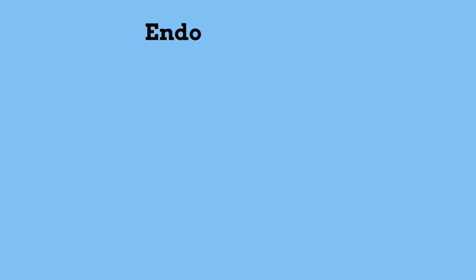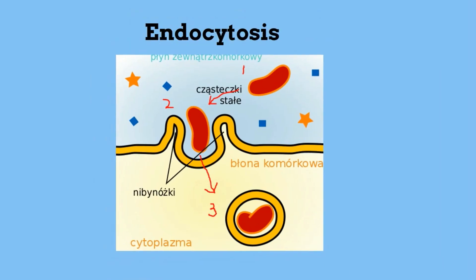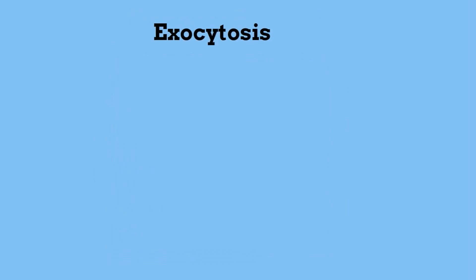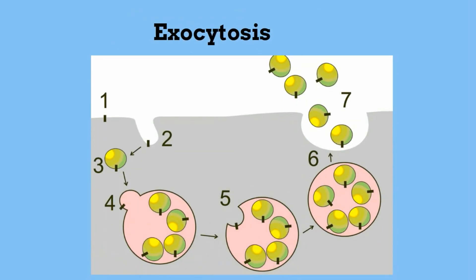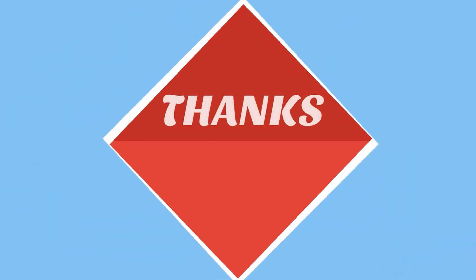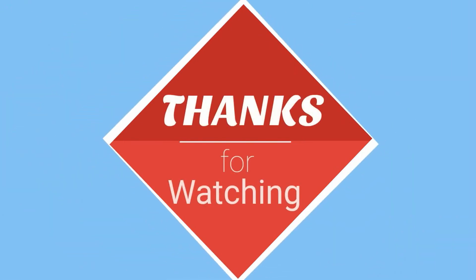A second method is called endocytosis, in which the cell engulfs the object and brings it into the cell. And finally, exocytosis is the opposite — the cell expels objects out of the cell. Hope this helps with cell transportation and active and passive transport. Thanks for watching.